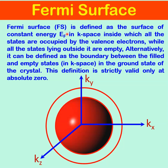The Fermi surface is defined as the surface of constant energy in K-space, inside which all the states are occupied by the valence electrons while all the states lying outside it are empty. In other words, it can be defined as the boundary between the filled and empty states in the K-space region in the ground state of the crystal.